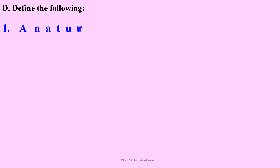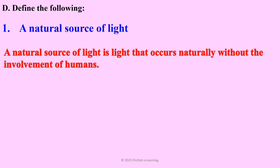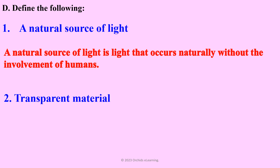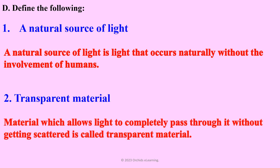Define the following. A natural source of light is light that occurs naturally without the involvement of humans. A transparent material is a material that allows light to completely pass through it without getting scattered — this is called a transparent material.